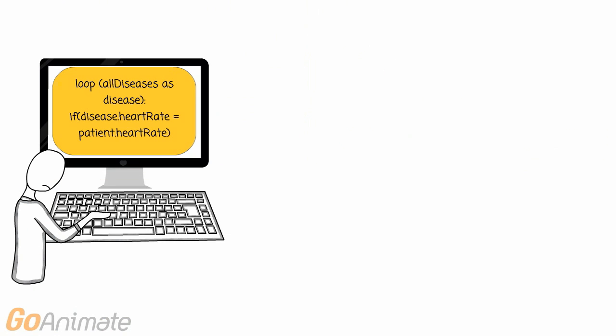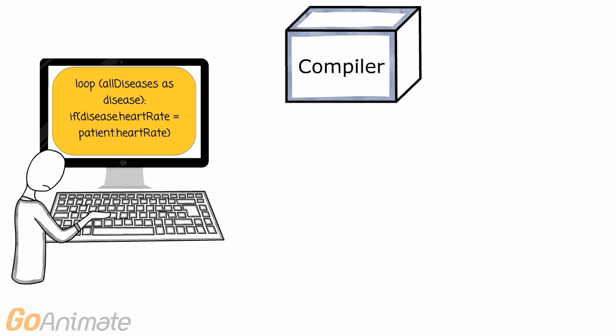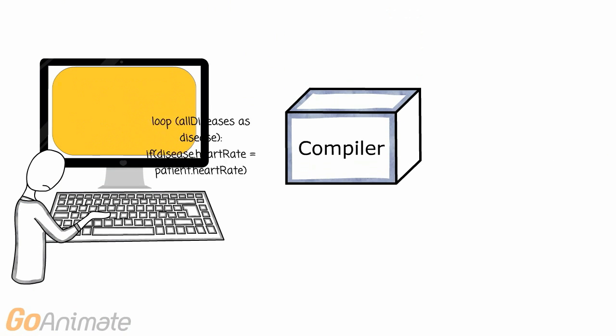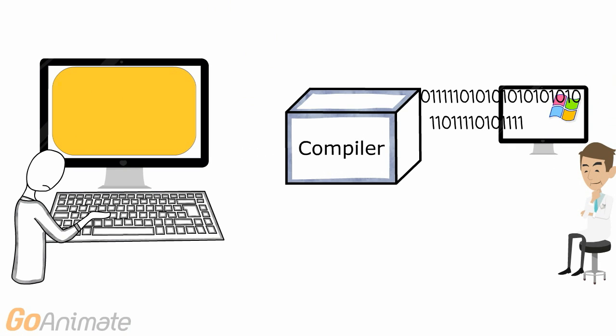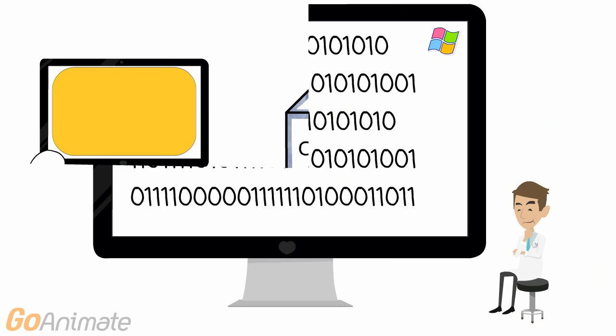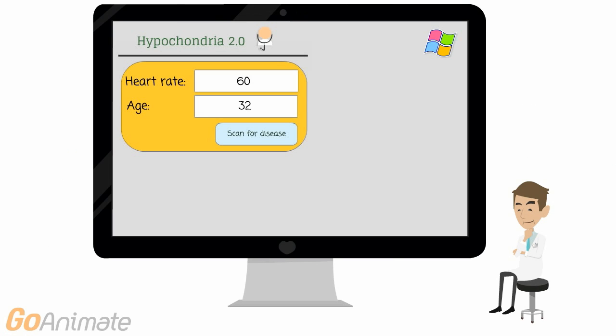As a programmer, you get help from software called the compiler. The compiler is responsible for translating your program code into a form which the operating system, like Microsoft Windows, understands. The operating system is then responsible for operating the hardware.